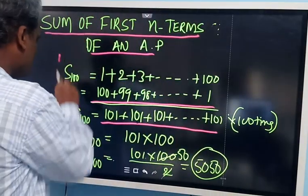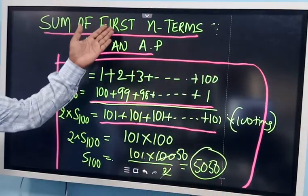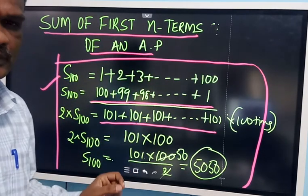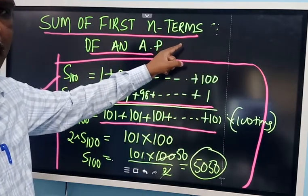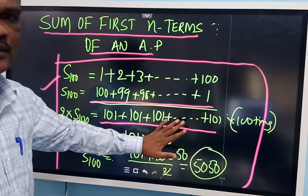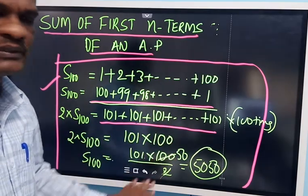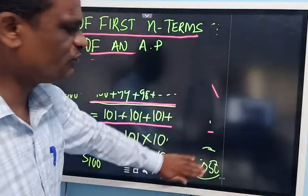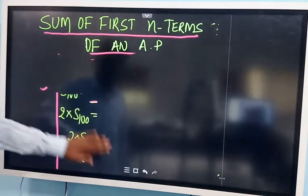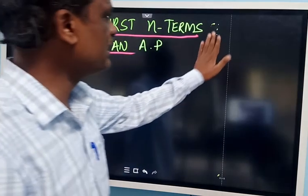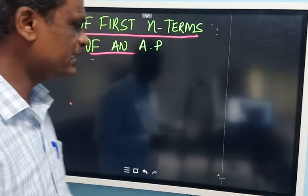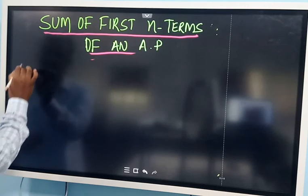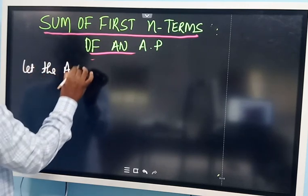This basic concept led to the discovery of the formula for the sum of first N terms of an arithmetic progression. This is the core concept behind the discovery of the sum of N terms of an AP. Using this same method, let us now find out the formula for the sum of first N terms.